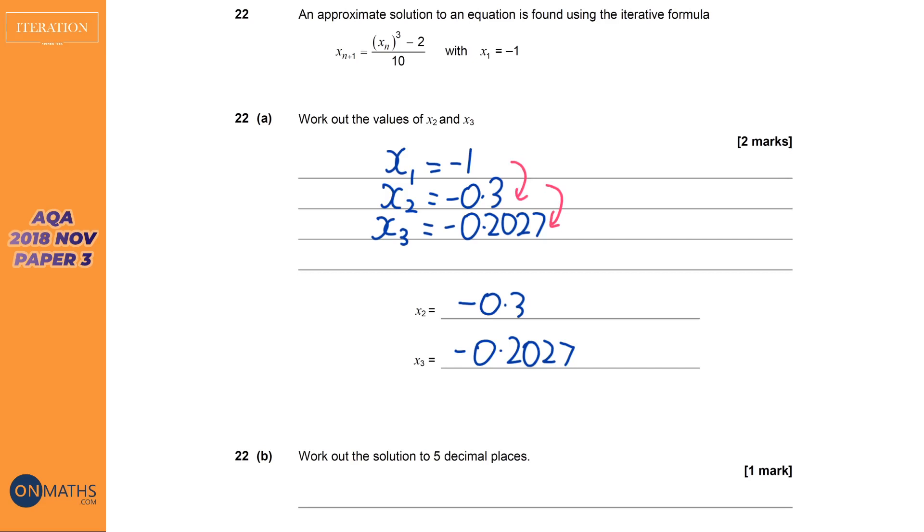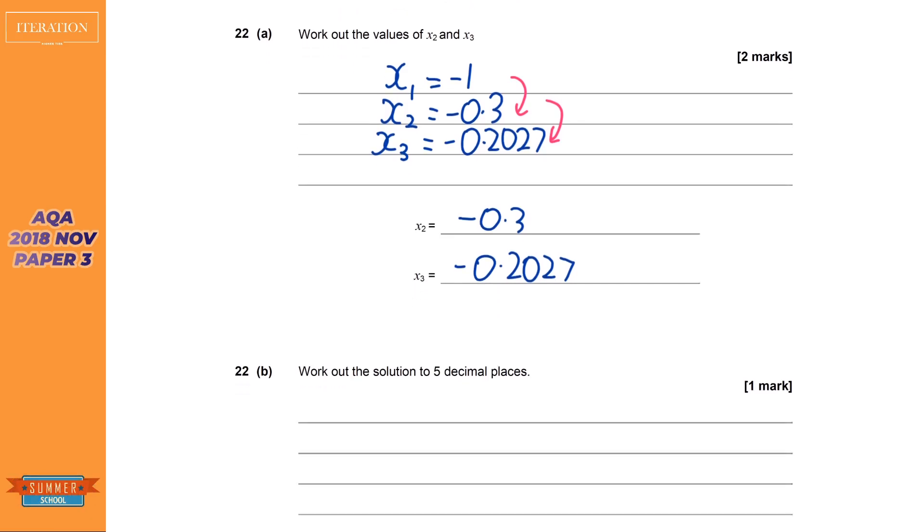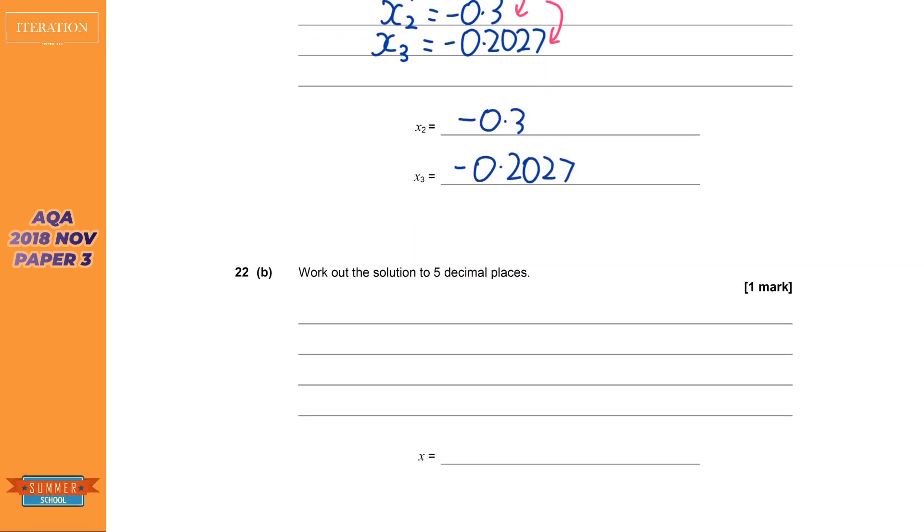So what your calculator should look like is bracket, answer or ans, close bracket, cubed, take away 2, over 10, all of that over 10. Now, what you now do is you press an equals, and for every equals you press, will give you the next term in the sequence. And this is the iterative function on your calculator. It's the calculator doing all the hard work for you. So when I press equals once, I get minus 3 over 10, or minus 0.3. When I press equals again, I get minus 0.2027, which is what I got before.